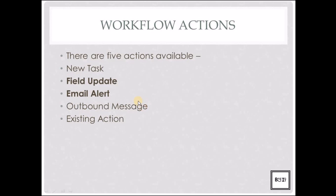Now that we know a workflow consists of two parts — criteria and actions — let's understand the different types of actions available in Salesforce. There are five actions available: new task, field update, email alert, outbound messages, and existing action. In this video, we are only going to learn about the two widely used types, which are field update and email alert. We'll learn about the remaining ones in a later advanced course.